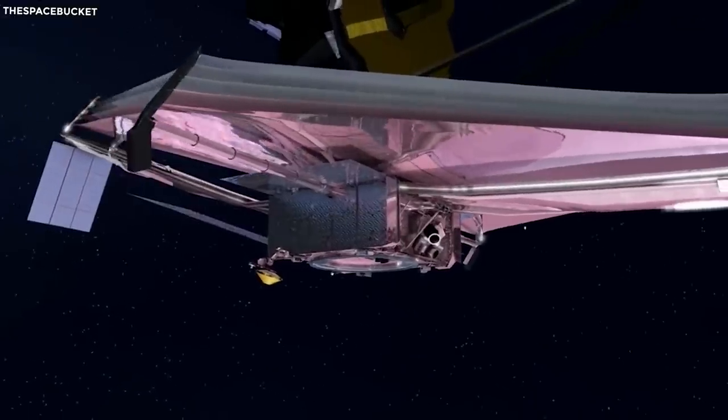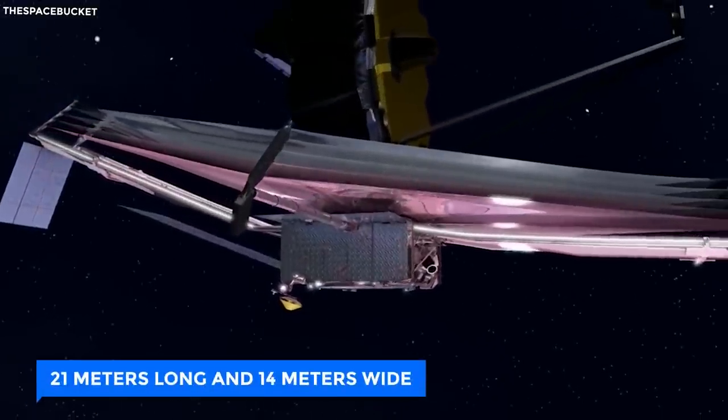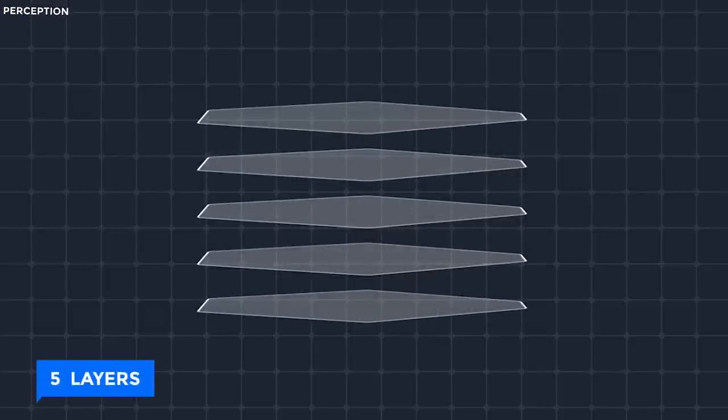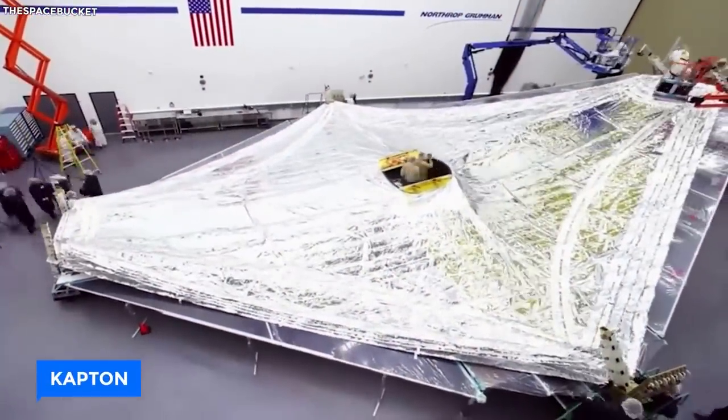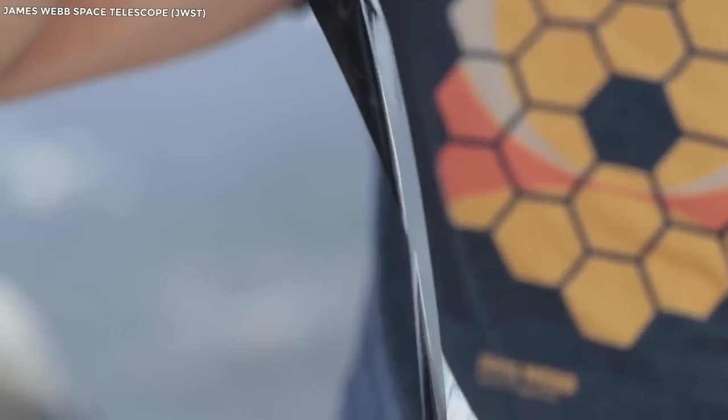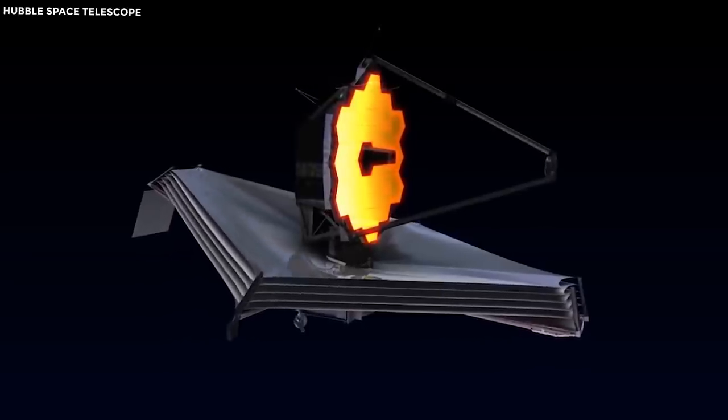It's huge, with dimensions 21 meters long and 14 meters wide. This shield has five layers with space between them to cool efficiently. The layers use a robust material called Kapton that can handle high heat. Aluminum and silicone coatings on some layers enhance heat resistance.